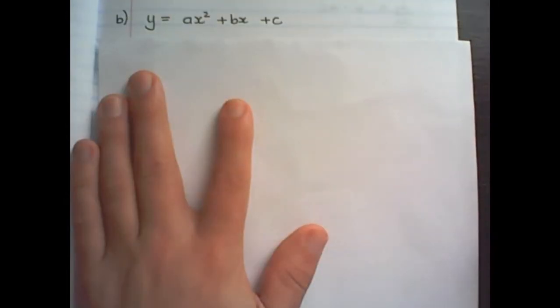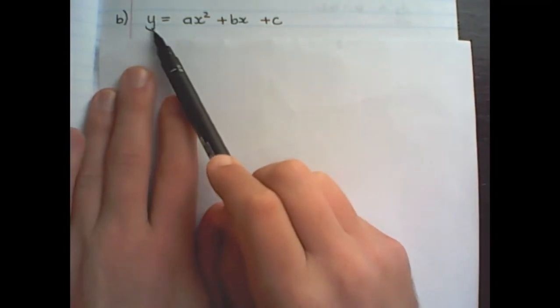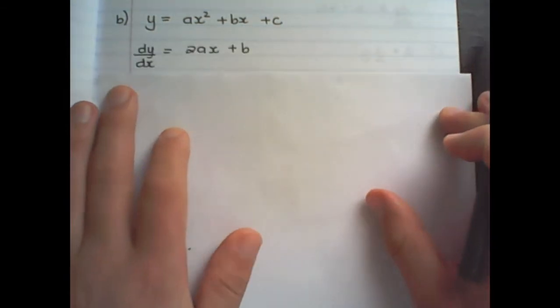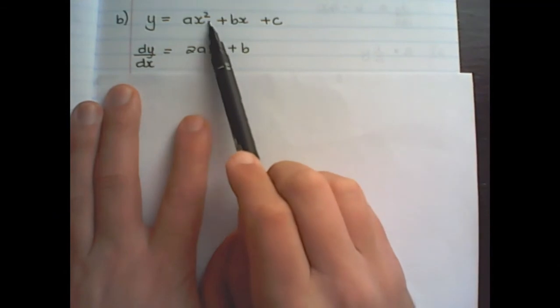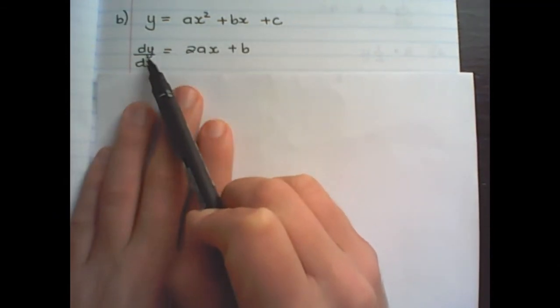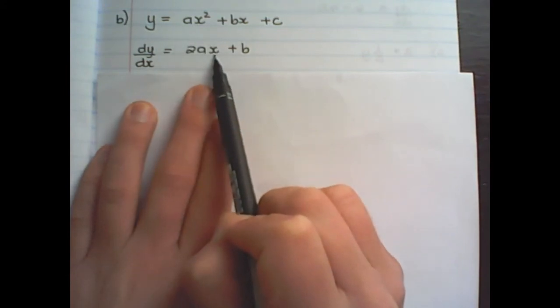How about the standard trinomial expression? We have y is equals to ax square plus bx plus c. So in order to differentiate I differentiate each term individually. So I have as the derivative 2ax plus b.